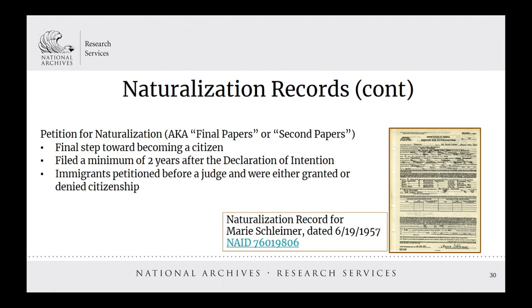The petition for naturalization, also called final papers or second papers, is the final step toward becoming a citizen. Filed a minimum of two years after the declaration, immigrants petitioned before the judge and were either granted or denied citizenship. The petition did not need to be completed at the same court as the declaration. In many cases, if the petition was filed at a federal court, the declaration was consolidated with the petition when the actions took place at different locations. As with declarations, early records tend to record very little detail. Unlike declarations, even though additional biographical information is recorded on later forms, you will not find photos attached to these documents.